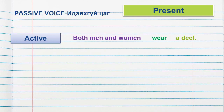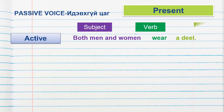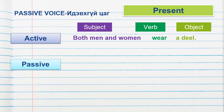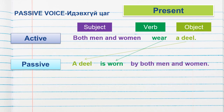Both men and women wear a deal. Both men and women — they are subjects, 'wear' is the verb, 'a deal' is the object. To change into present passive: 'a deal' — the object — goes first. Next, of course, the verb: present 'to be' is 'is', then 'wear' as past participle, followed by 'by both men and women' — they are the subjects. Look carefully.